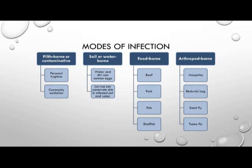How do we become infected by parasites in endemic regions? Filth-borne or contaminative infection results from a lack of personal hygiene or community sanitation — for example, lacking a septic system to remove waste from water sources. Soil or water-borne infection occurs when water or dirt contain eggs that can infect humans, or when larvae penetrate the skin. Food-borne infections can come from undercooked beef, pork, fish, or shellfish, all of which are potential sources of parasitic infection.